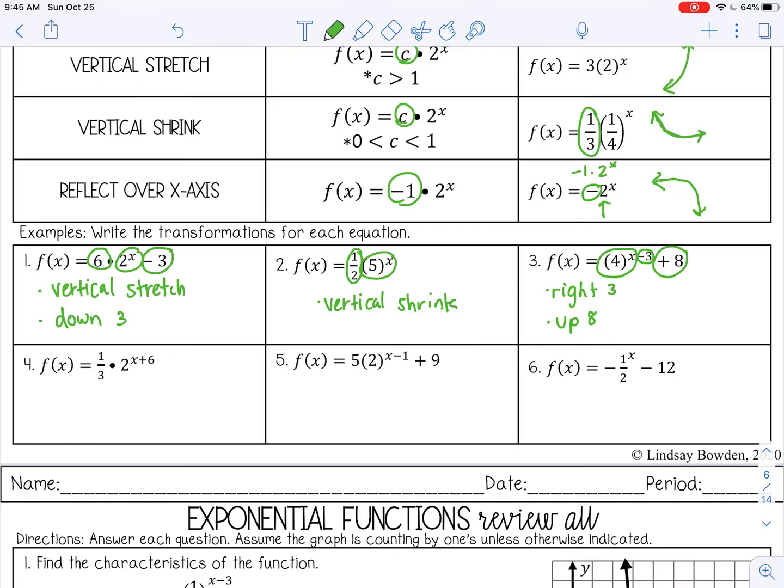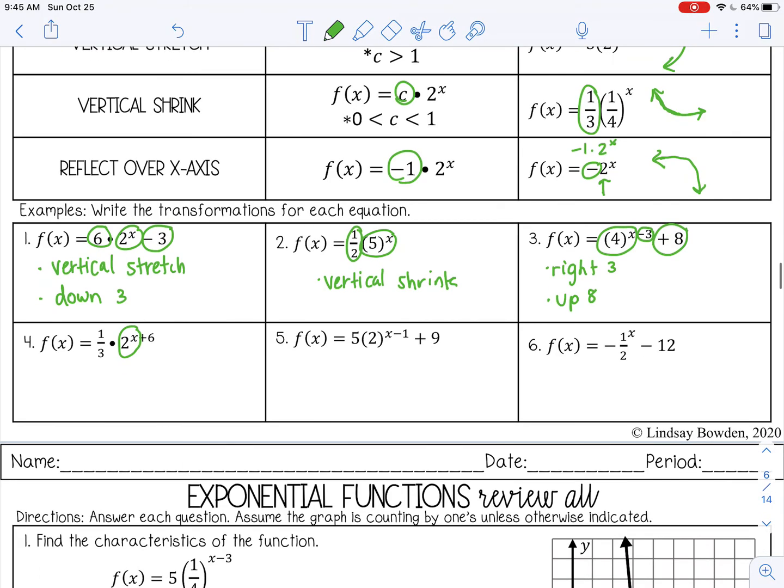Pause the video and try the last 3 by yourself. Let's see how we did. So number 4, here is our function 2 to the x. It may help if you circle that first. And then you can see what else is added to it. So I have that 1/3 out front. That's going to be a vertical shrink because it's less than 1. And then I added 6 to the exponent. That's going to move it left 6.